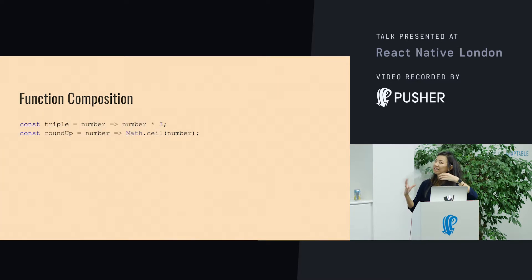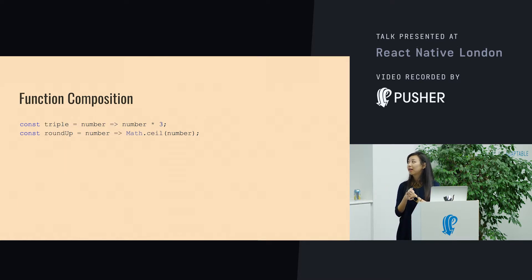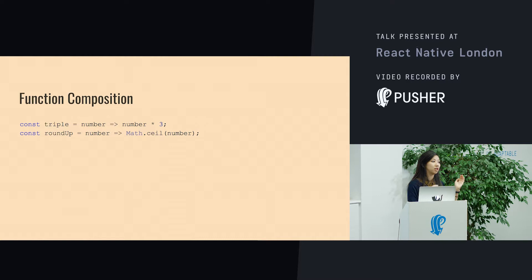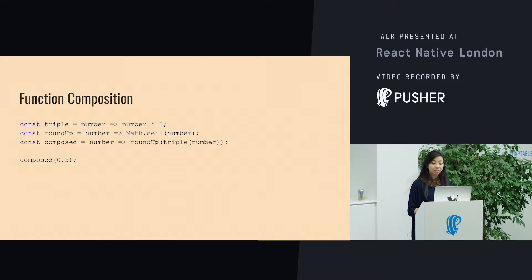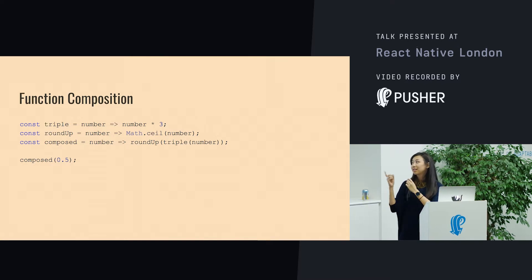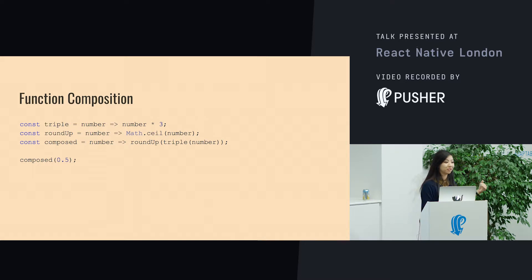Hopefully this will clear it up. We've got two basic functions — one that triples a number, and another that rounds it up to the nearest whole digit. The third function is a mishmash of the two together, and that's composition. It's just multiple functions chained together.